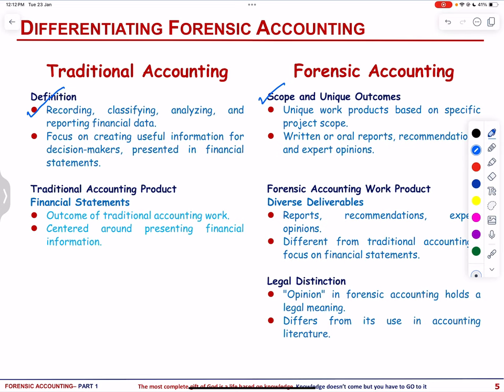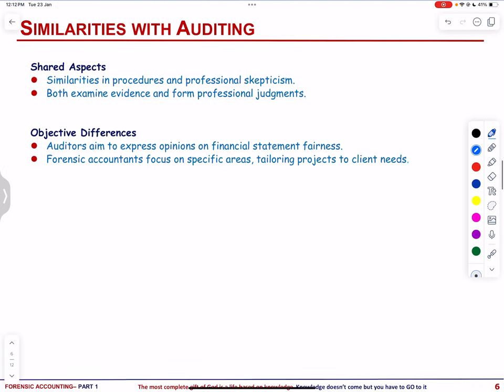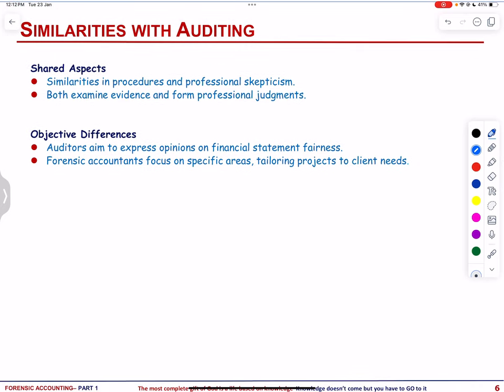The term 'opinion' in forensic accounting holds a distinct legal meaning, differing from its use in accounting literature. While forensic accountants and auditors share some similarities such as using procedures and professional skepticism, their overall objectives differ significantly. Auditors aim to express an opinion on the fairness of financial statements, while forensic accountants focus on specific areas, tailoring each project to the client's needs with the objective of reporting findings or recommendations.